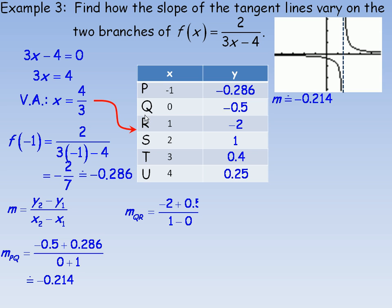So now we'll do q to r. So negative 2 minus negative 0.5, same as negative 2 plus 0.5, over 1 minus 0. And that works out to negative 1.5. So we'll put that beside the table here. Now that's an example of two secant lines to the left of the vertical asymptote. And I'm going to do a couple above.